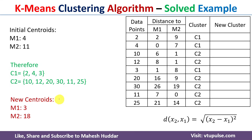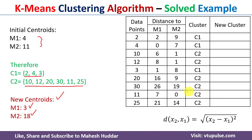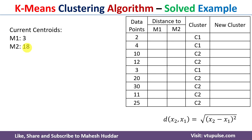To calculate the new centroid, we add all data points in the cluster and divide by the number of data points. For c1: (2 + 4 + 3) / 3 = 9 / 3 = 3. For c2, adding all remaining data points and dividing by 6 gives 18. So the new centroids are m1 = 3 and m2 = 18. These new centroids become the current centroids for the next iteration.